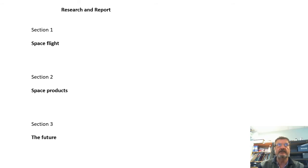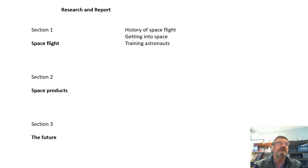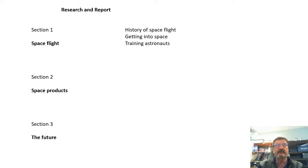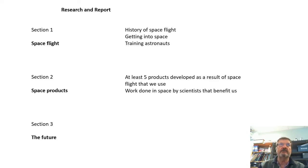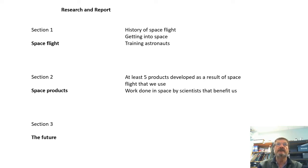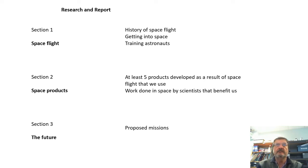Very briefly to start: for spaceflight, you need to cover the history of spaceflight, what significant moments there were, why getting into space is difficult, what factors need to be considered, and training astronauts — getting astronauts ready for takeoff and for living in space. Section 2 is a report on at least five products developed as a result of spaceflight that we use in everyday lives, and what work scientists do in space that could benefit our lives. Section 3 covers future missions — manned, unmanned — and possibly life on other planets and whether we'll ever leave this solar system.